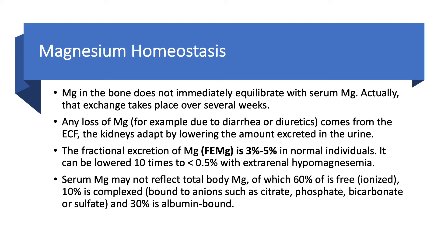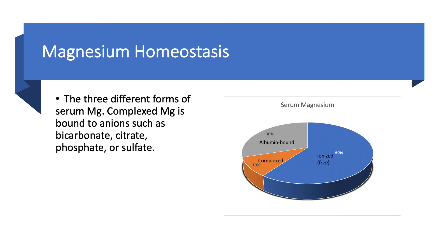Looking at serum magnesium specifically: about 60% is free ionized, 10% is complex-bound to citrate, phosphate, bicarbonate, or sulfate, and 30% is albumin-bound. This is similar to calcium, where roughly half is ionized, about 40% is albumin-bound, and about 7% is complex.